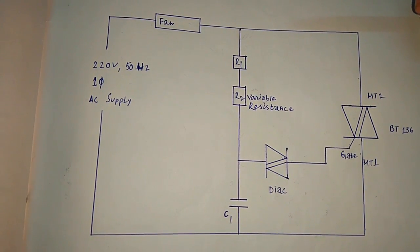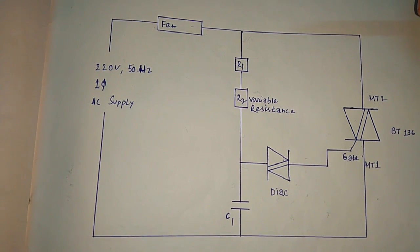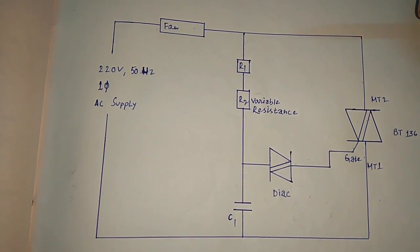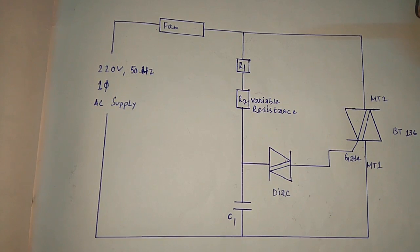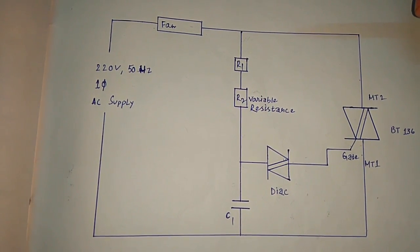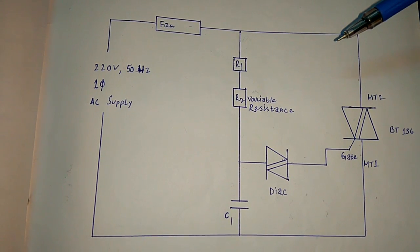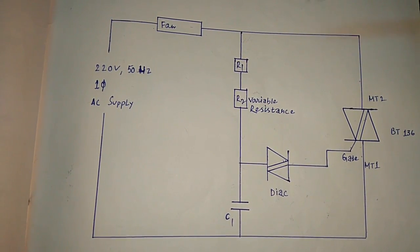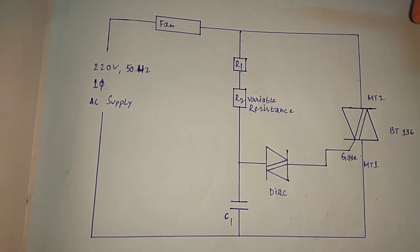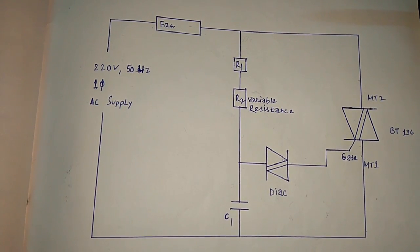TRIAC and DIAC are actually bidirectional switches, so it's possible to control the firing angle of TRIAC in both positive and negative peaks, as it can conduct in both the positive and negative cases.